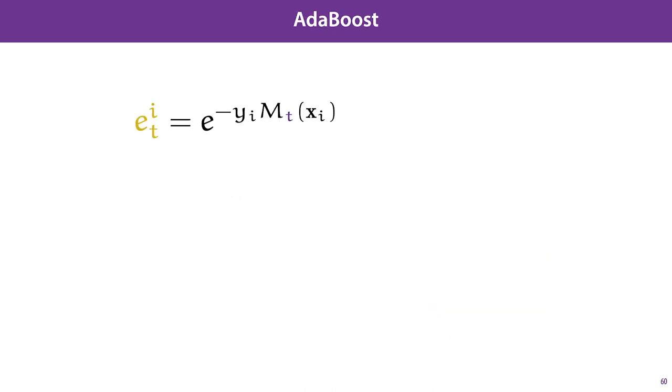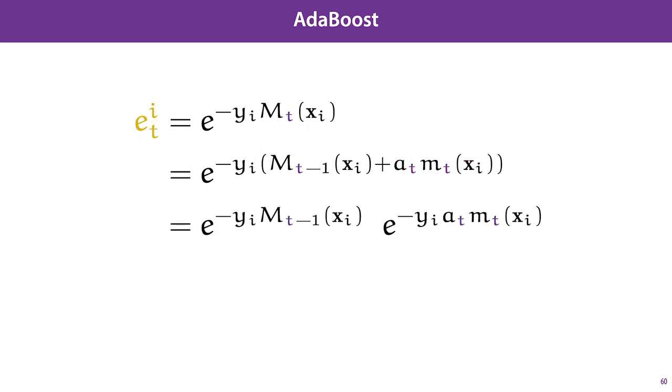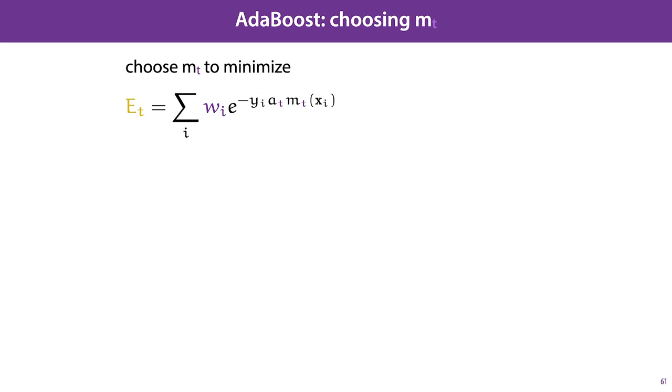Now we can take this per instance loss and rewrite it to separate the error caused by the ensemble so far, which we can't change anymore, and the error caused by our choice of model MT, which we can still optimize for. Taking this out of the exponential we get two factors, one which is constant and one which we still have control over. We call the one which is constant our weight wi for that instance. So if we sum the loss per instance over all of our instances, we see that we now have a weighted loss.